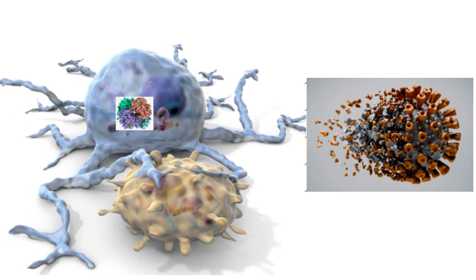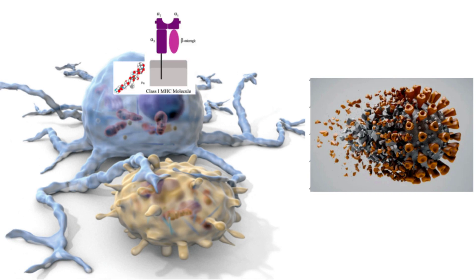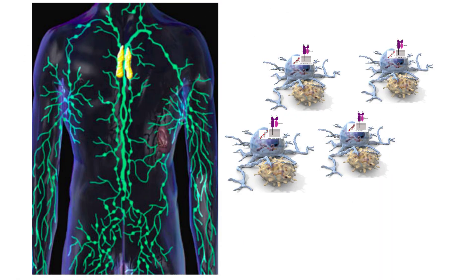Process them into peptides which then bind to this MHC molecule. This peptide-MHC combination is unique. We have to keep this in mind. Then these dendritic cells travel to the lymph nodes.